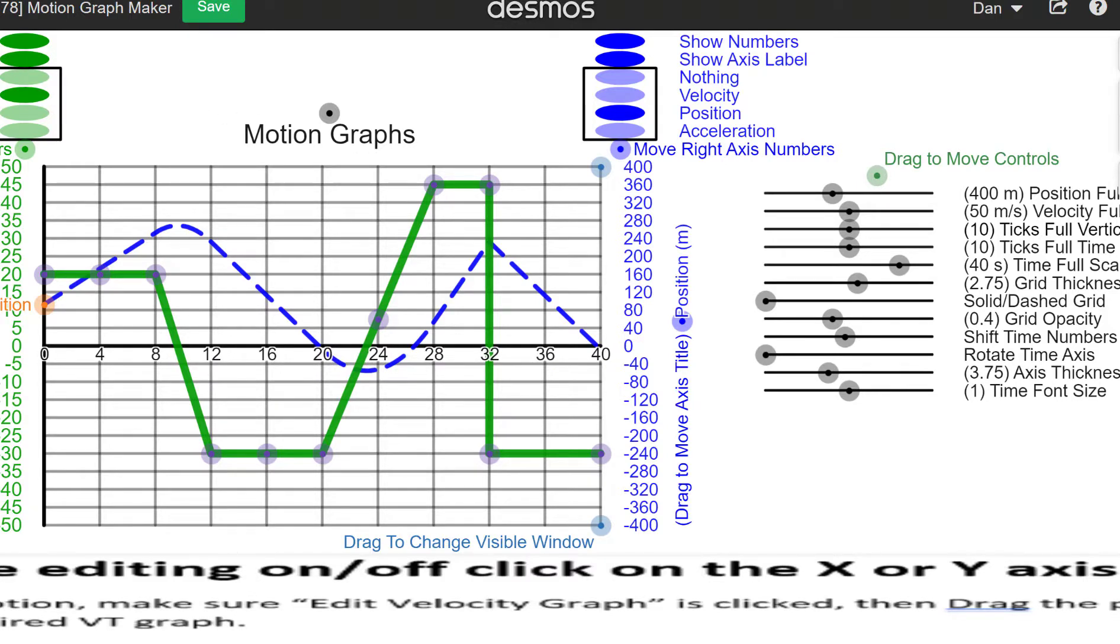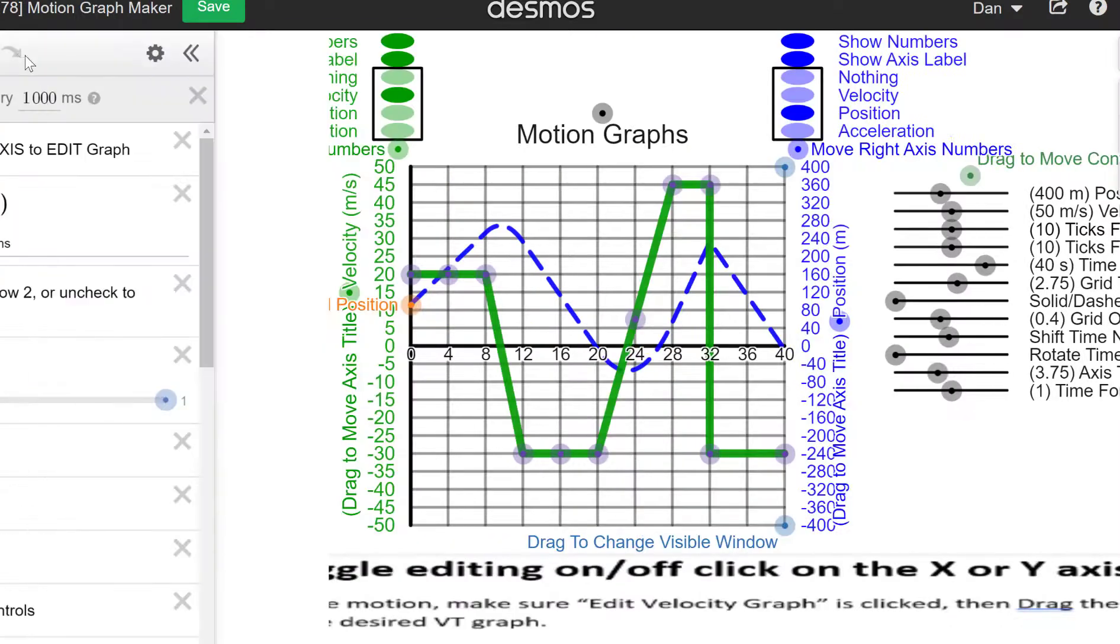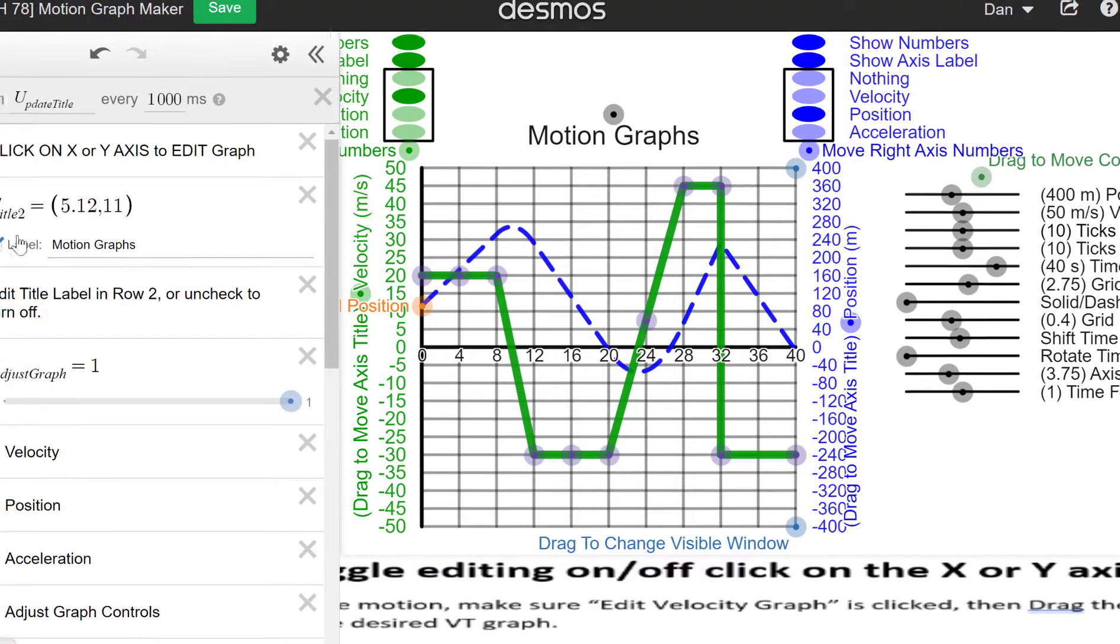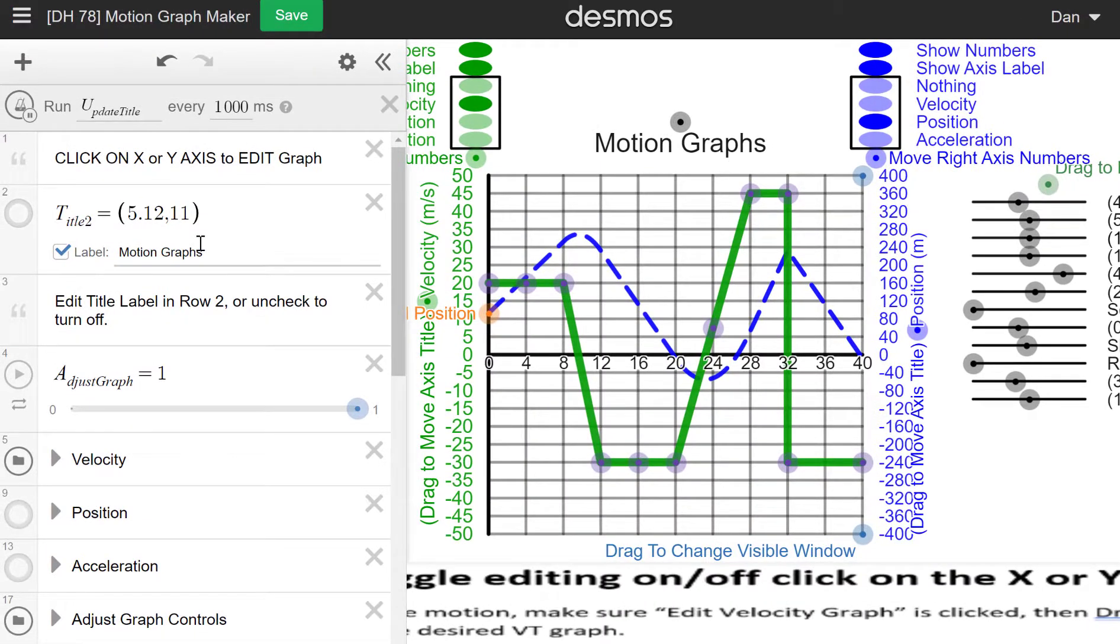Now this title, you can also turn that on and off or make the title say whatever you want. In what's currently line 2, where it says motion graphs, you can make that whatever title you want. And if you don't want that, just uncheck it.